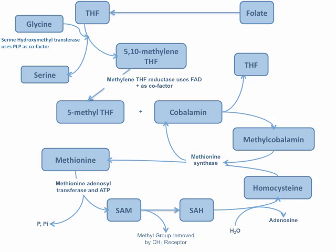SAH is then converted into homocysteine by the addition of water and release of adenosine, thus recycling homocysteine. Homocysteine is an independent marker for cardiovascular disease, so its recycling back to methionine is important — a process that requires both folate and vitamin B12 in the form of cobalamin.